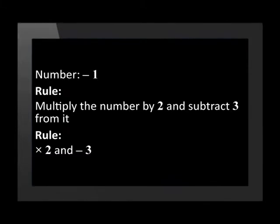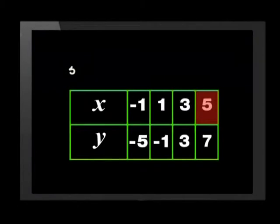You are probably right, but let's check this by applying the rule. So applying the rule to an x value of 5, I get 5 times 2 is 10. 10 minus 3 is 7. So the y value is 7. So each x value has a y value that is related to it.